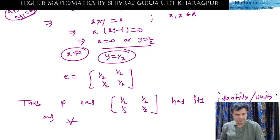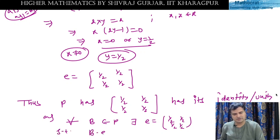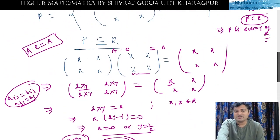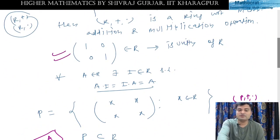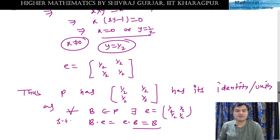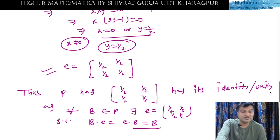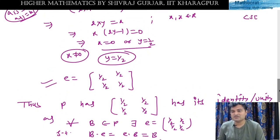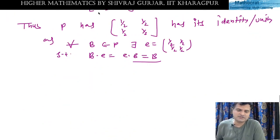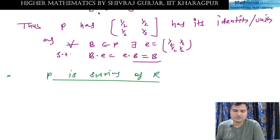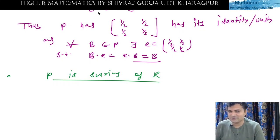So the identity of P is [[1/2, 1/2],[1/2, 1/2]], whereas the identity of R is [[1,0],[0,1]]. These are different! R has unity [[1,0],[0,1]] and P has unity [[1/2,1/2],[1/2,1/2]]. This was a question asked in CSC — it's a PYQ — where we have to show P is a subring of R with a different identity.